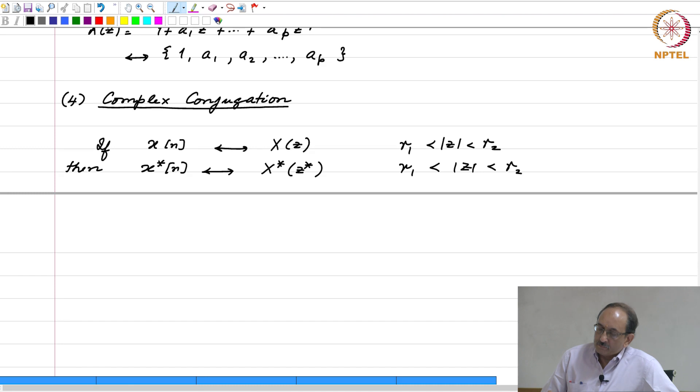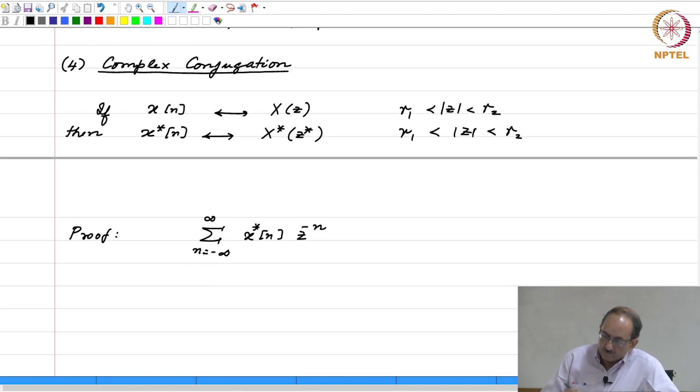And ROC remains the same and the proof is really simple. Trying to find the Z transform of X star of n, you can take the complex conjugate outside to get rid of this because you want to relate this to the transform of X of n.